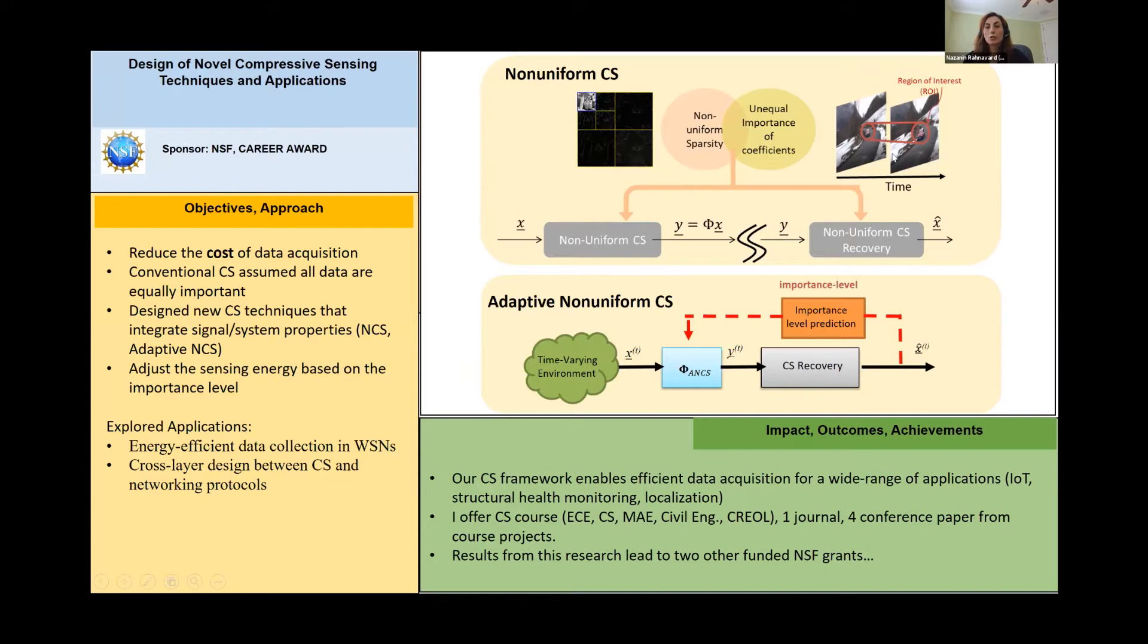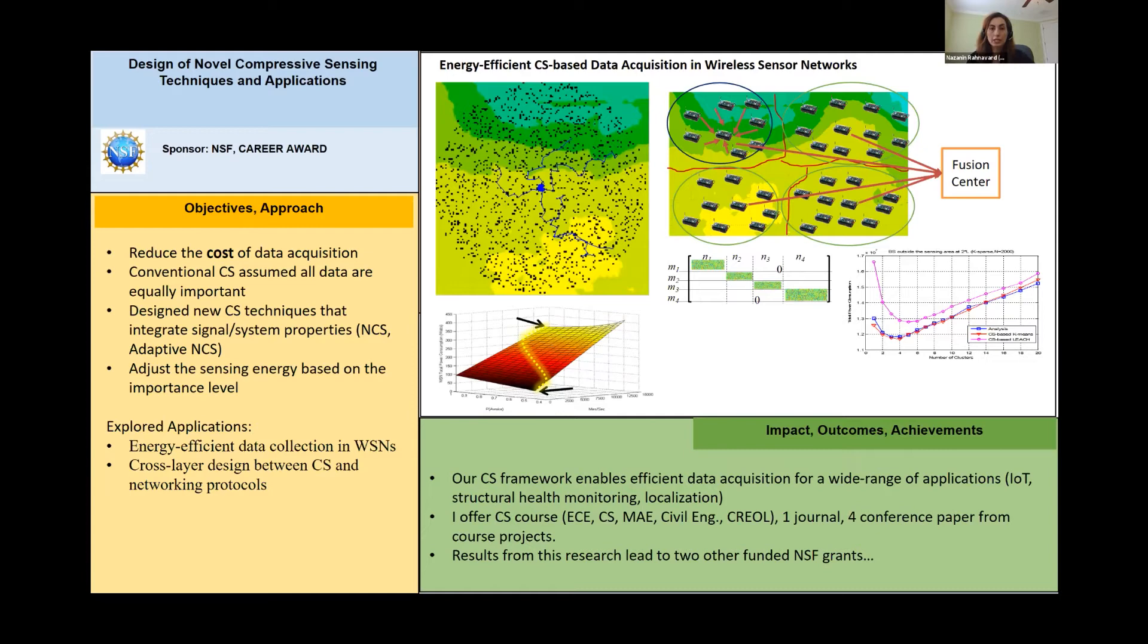For example, if we have a signal that has some regions of interest, instead of just uniformly doing compressive sensing, we do non-uniform compressive sensing. Or if you have time-varying signals, somehow we can get feedback from the environment and adjust the design of compressive sensing.